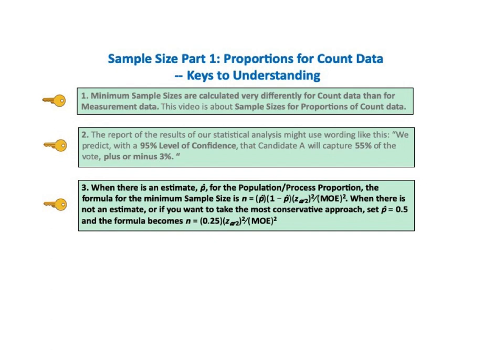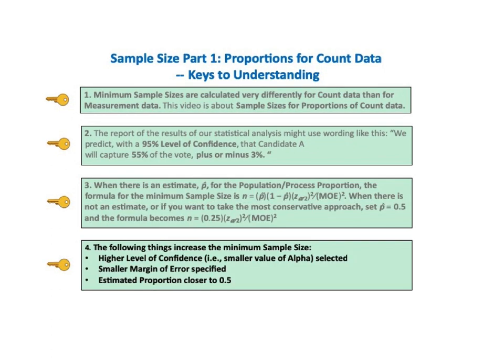Key number 3 says when there is an estimate p-hat for the population or process proportion, the formula for the minimum sample size is n equals p-hat times (1 minus p-hat) times z sub alpha over 2 squared, divided by margin of error squared. Key to understanding number 4 says the following things increase the minimum sample size: higher level of confidence (smaller value of alpha selected), smaller margin of error specified, or estimated proportion closer to 0.5.